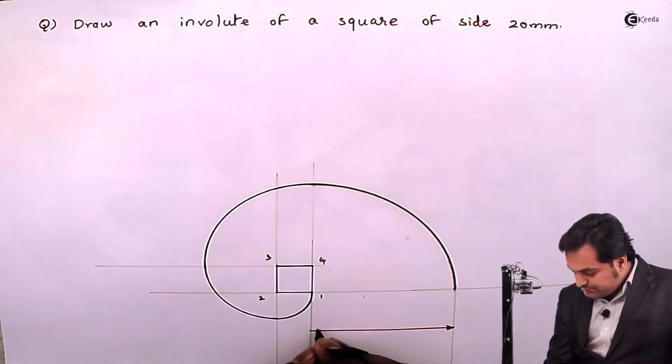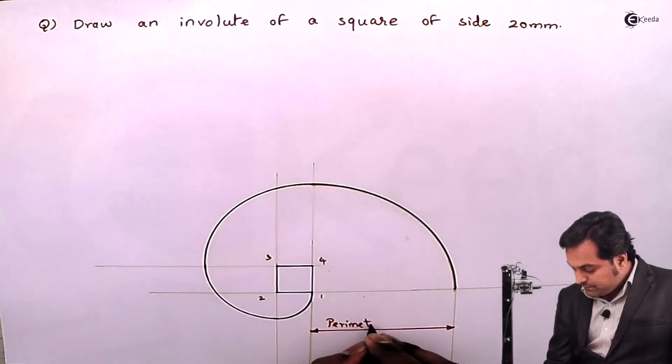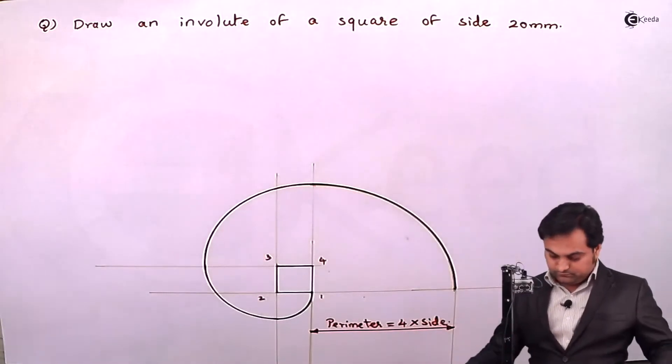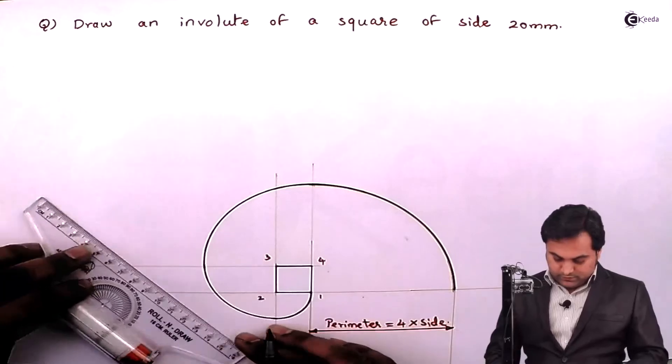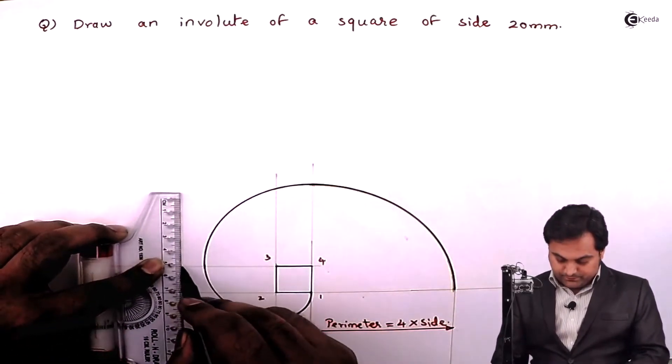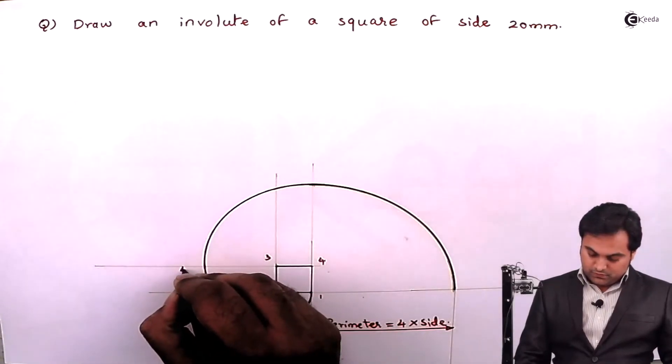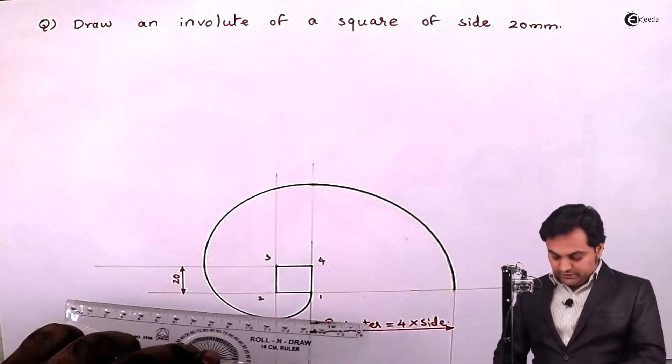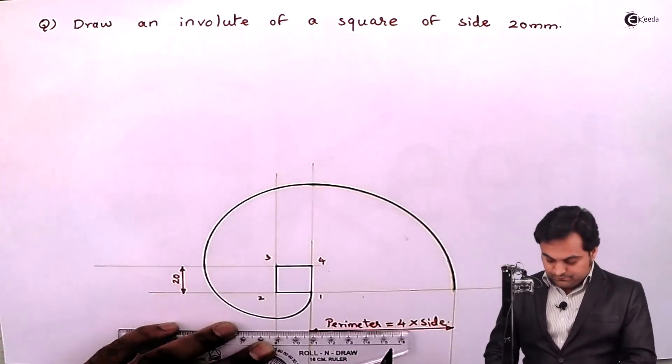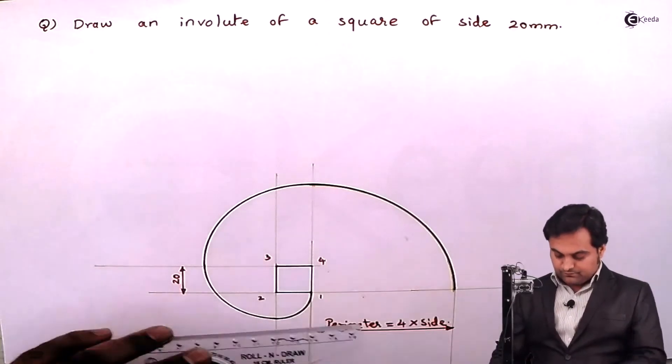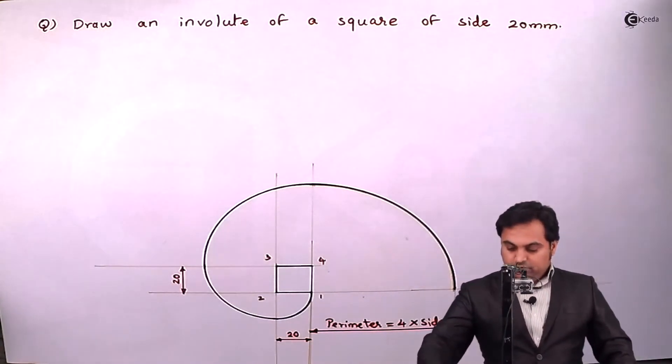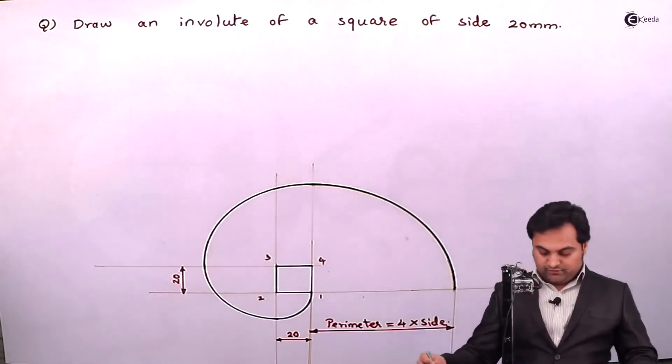So this distance means it is the perimeter, which is 4 into side. I'll give the dimension to this square: 20mm by 20mm. So this curve would be called an involute of a square.